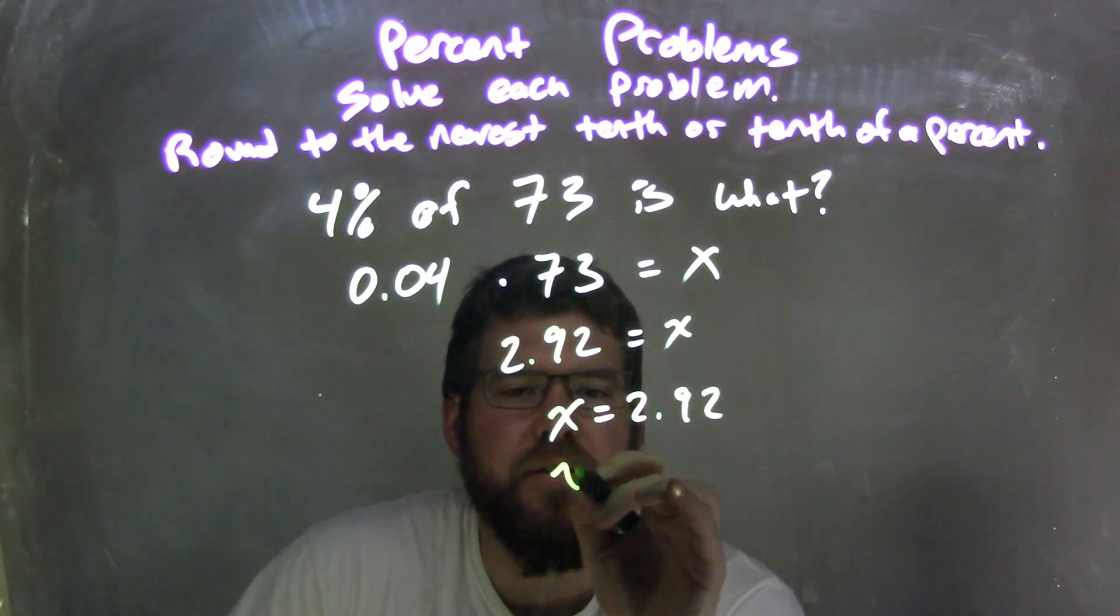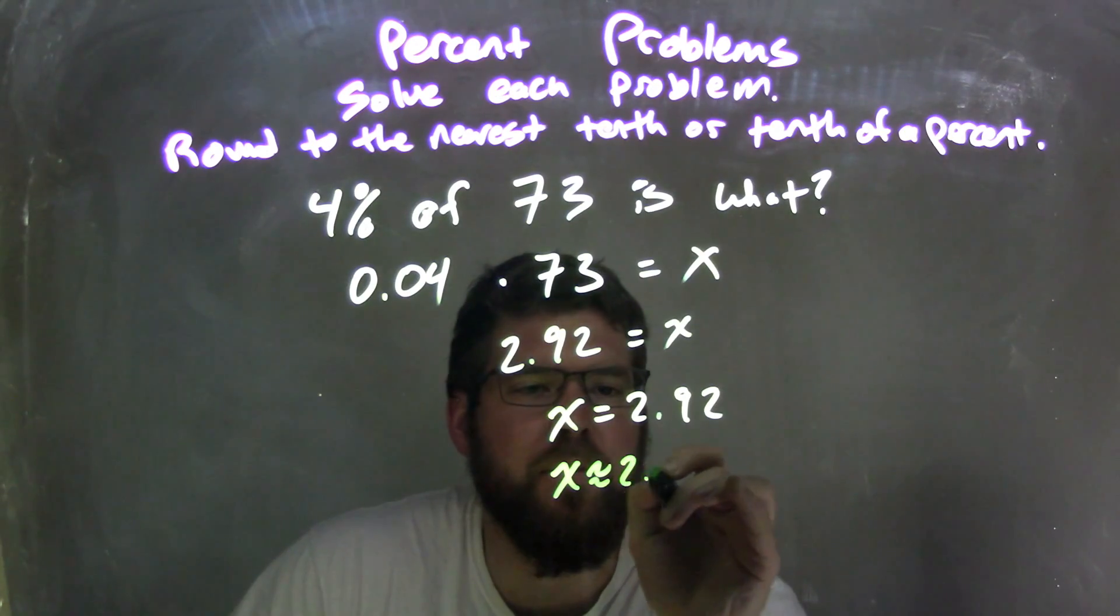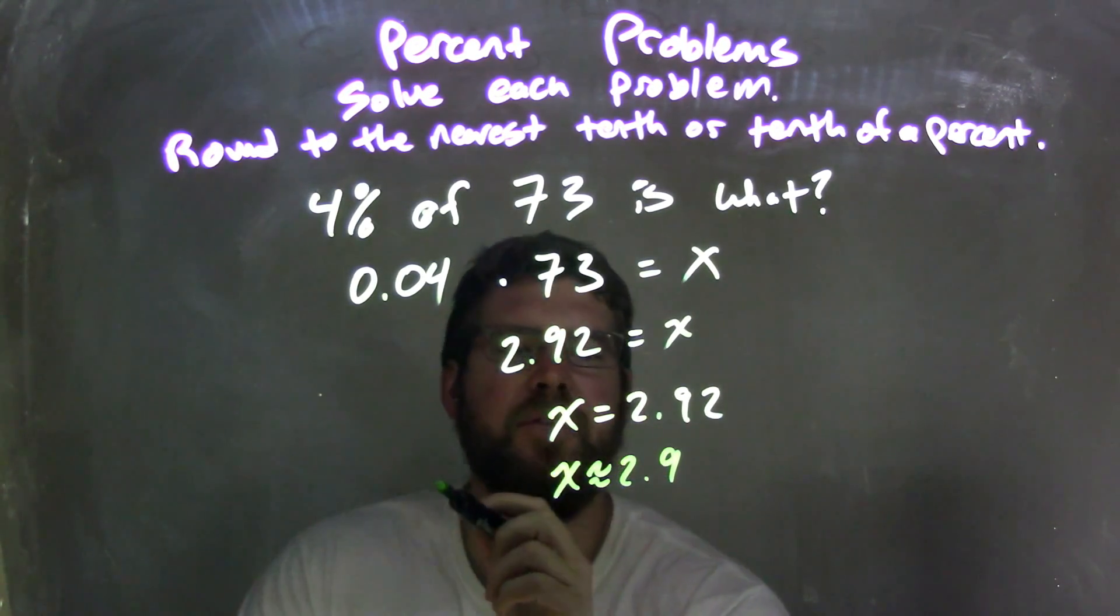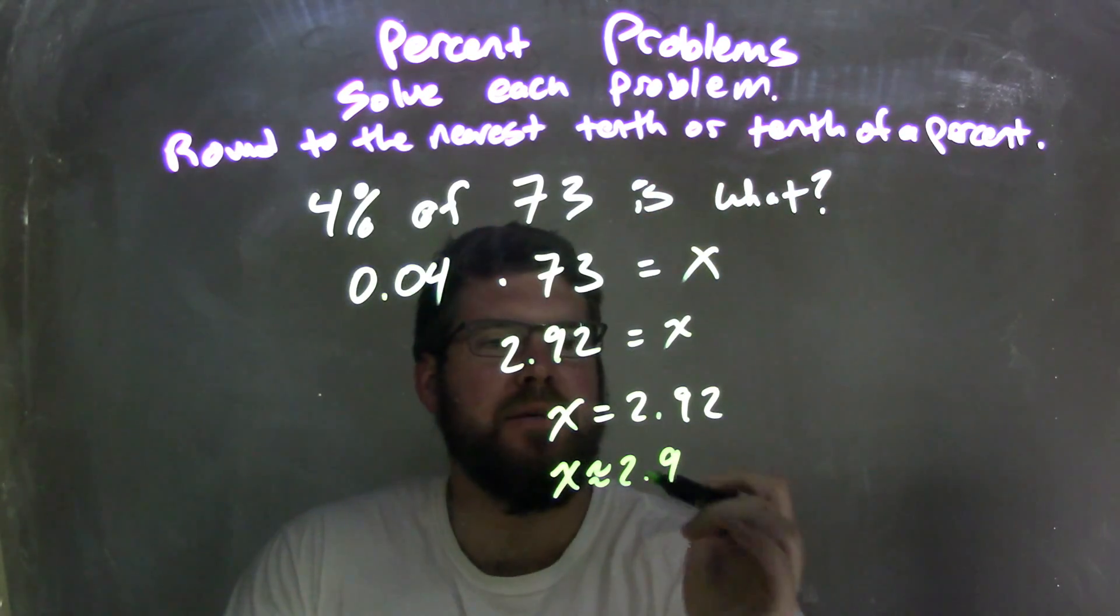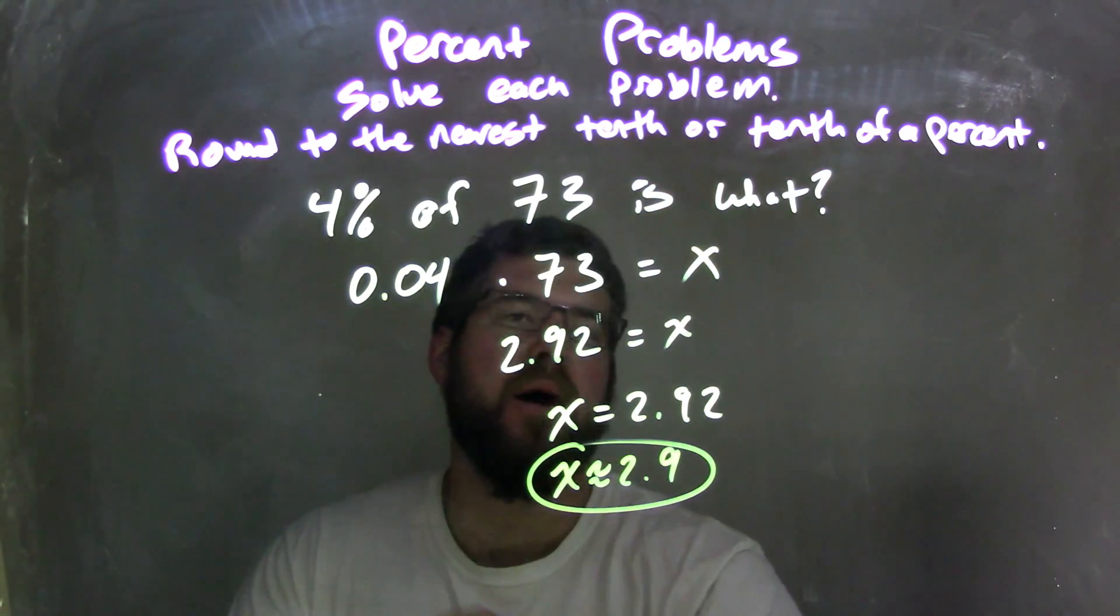So x here is approximately equal to 2.9. And what that does is answer our question here. It says 4% of 73 is approximately 2.9.